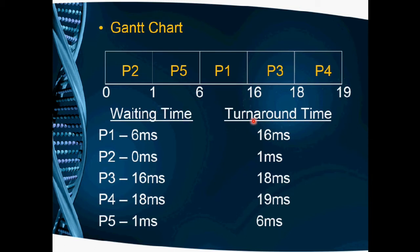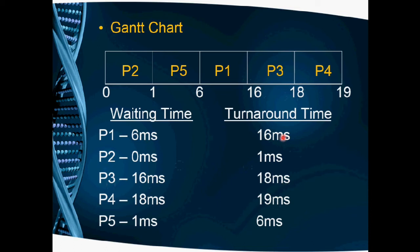Now we find waiting time and turnaround time, like previous scheduling algorithms. For P1, the starting time is 6, so 6 is the waiting time, and the ending time is 16, so 16 is the turnaround time. For P2, the waiting time is 0 and the turnaround time is 1. For P3, starting at 16, the waiting time is 16 and the ending time is 18, so 18 is the turnaround time.